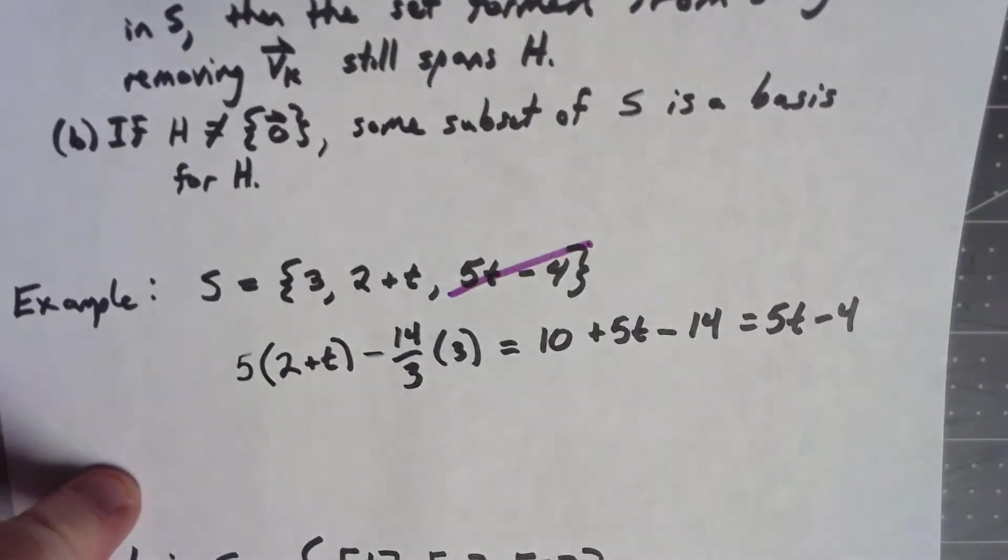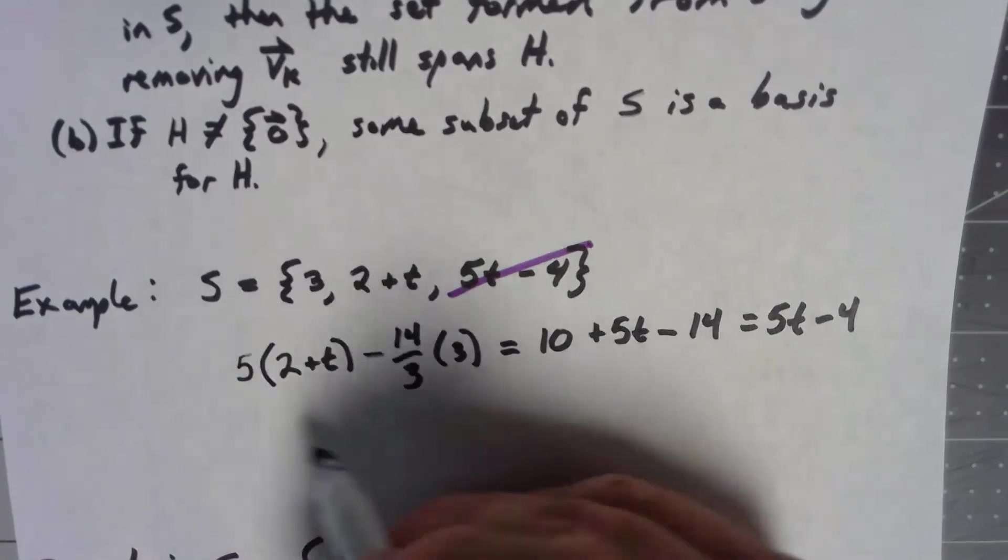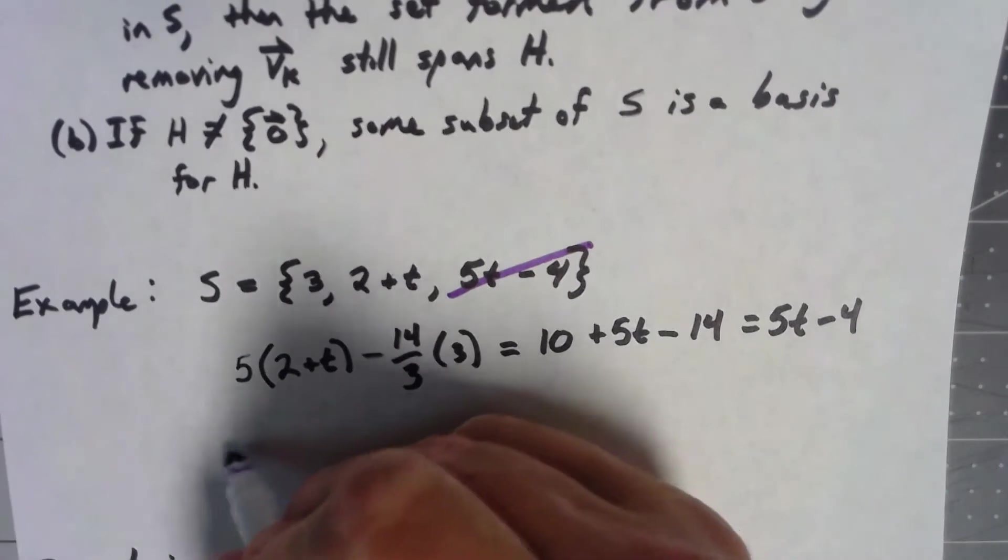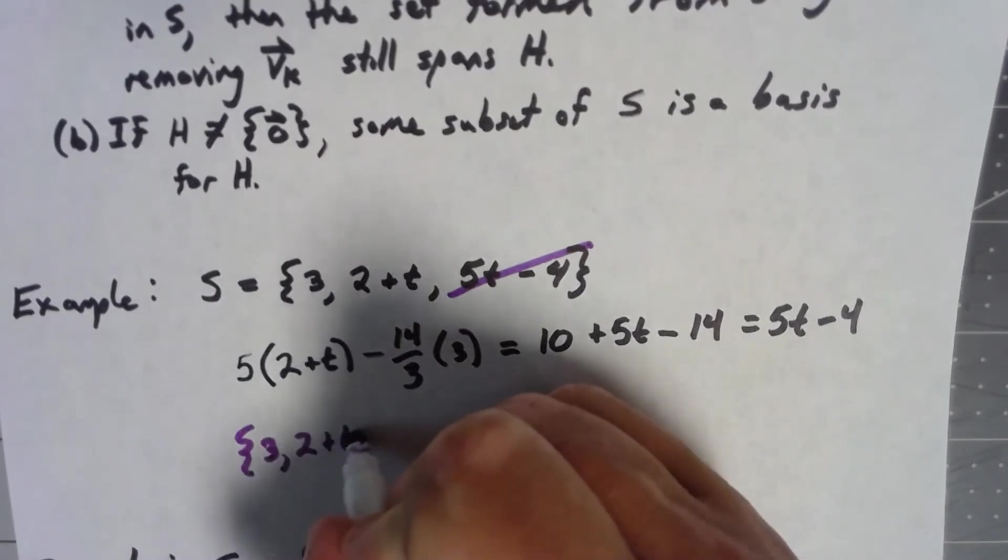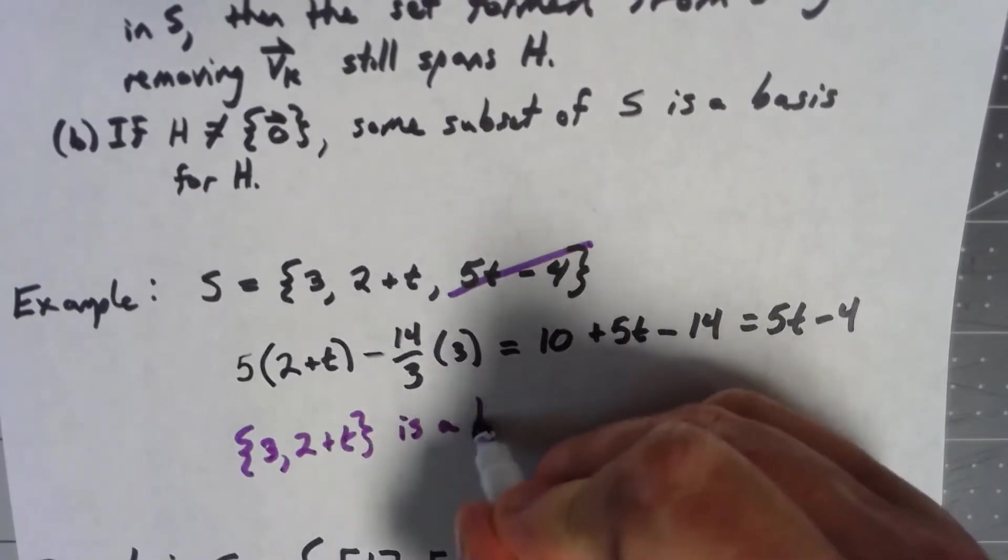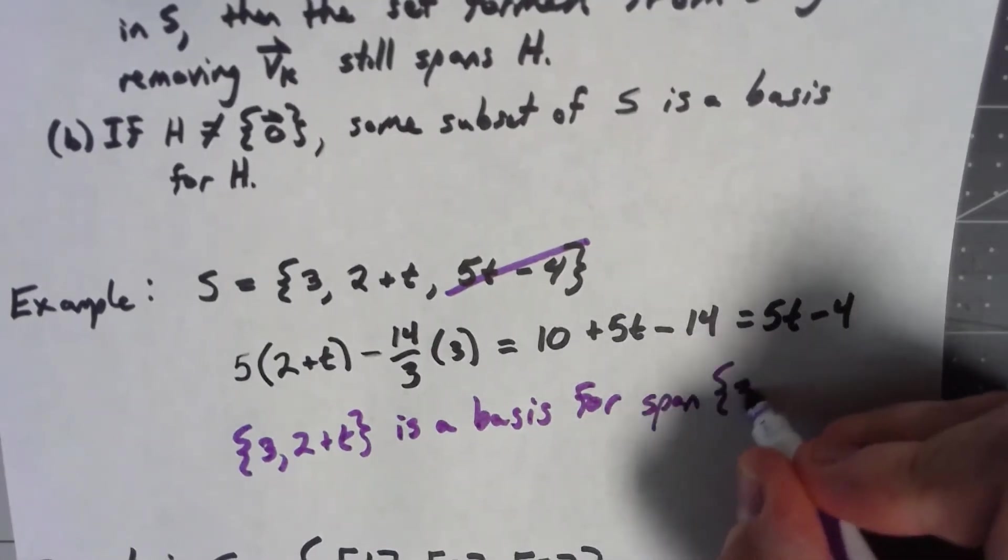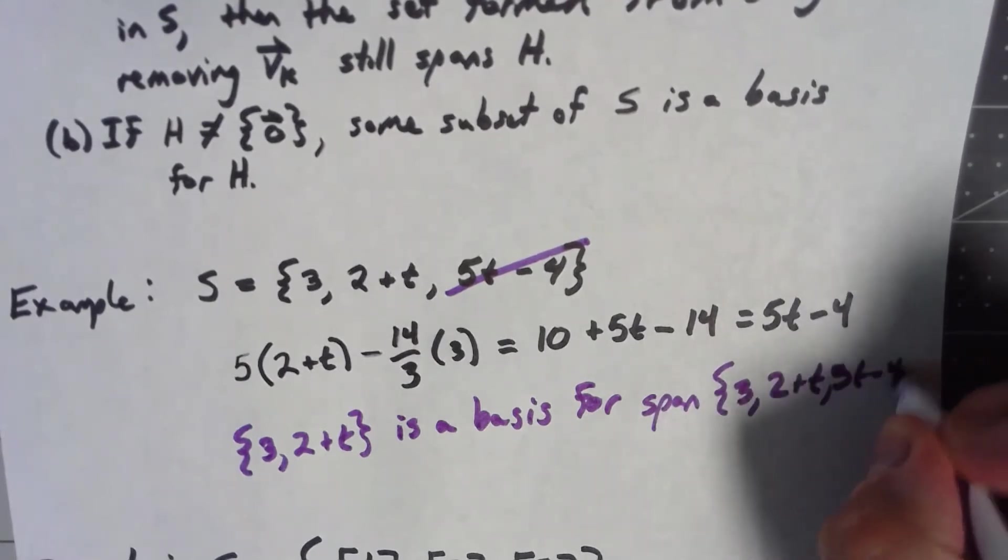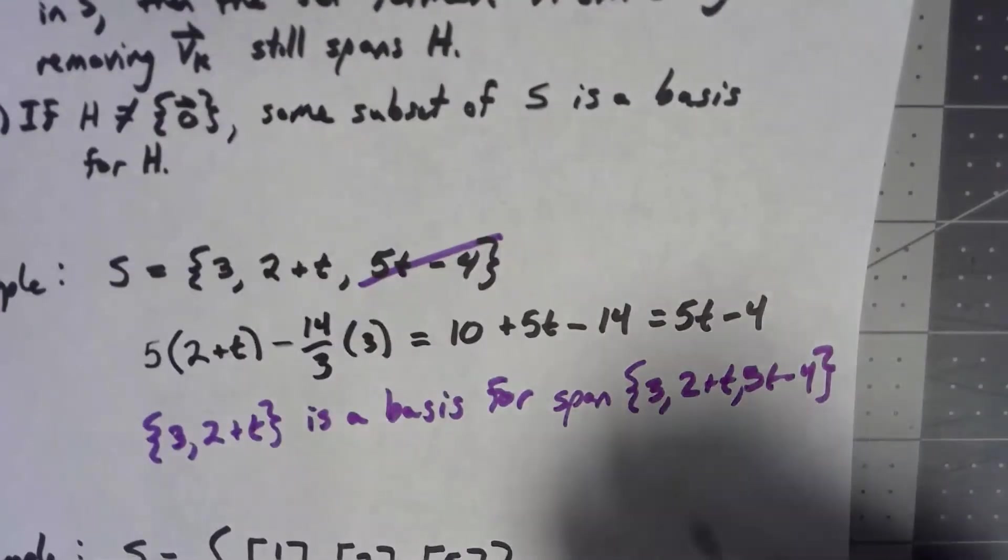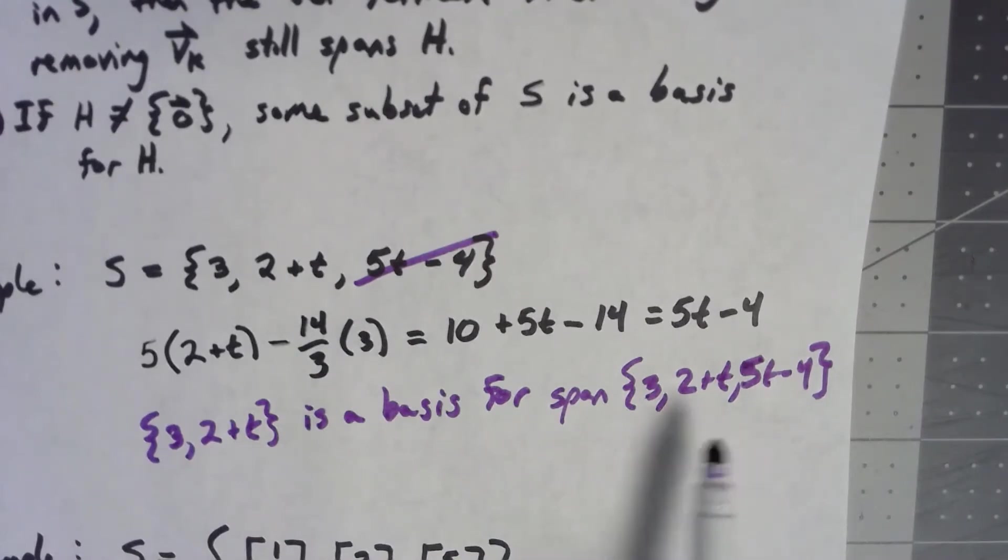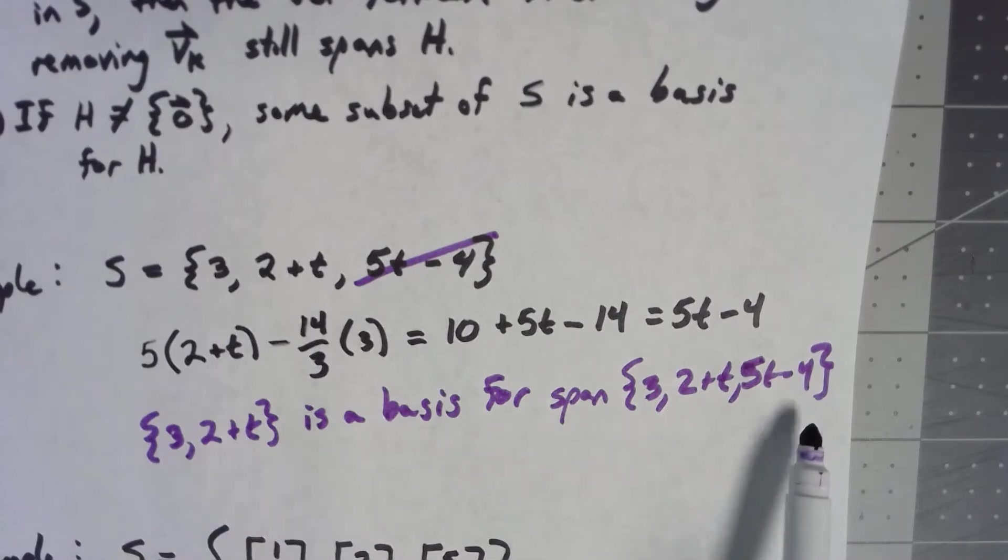That means that third vector isn't giving me any new information. It's not adding anything to this. So if I delete that from the set, I still span the same thing. So 3 and 2 plus t are now linearly independent. Again, easy to check that. So the set {3, 2 plus t} is a basis for the span of all three of those things. Because the 5t minus 4 wasn't adding new information, the remaining two vectors span that whole set. And because what I'm left with is linearly independent, it's now a basis for that set.